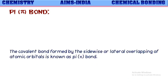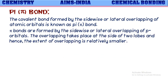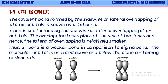Next, let us discuss pi bond formation. The covalent bond formed by the sideways or lateral overlapping of atomic orbitals is known as a pi bond. Pi bonds are formed by the sideways overlapping of p orbitals and are formed only after a sigma bond has already been formed. The overlapping takes place at the side of the two lobes, so the extent of overlapping is relatively smaller compared to a sigma bond. Thus, a pi bond is a weaker bond in comparison to a sigma bond. The molecular orbital is oriented above and below the plane containing the nuclear axis.